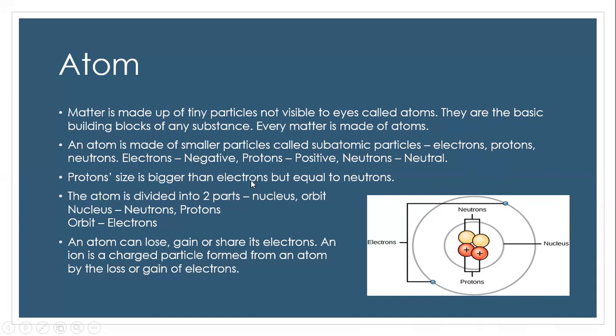Proton size is bigger than electrons but equal to neutrons. These two size equal. The atom is divided into two parts: nucleus and orbit. There might be one or two orbits and there's only one nucleus, like the brain or the center point. Electrons are present in the orbit and neutrons and protons are present in the nucleus. This is the nucleus, this might be the first orbit and this might be the second orbit.